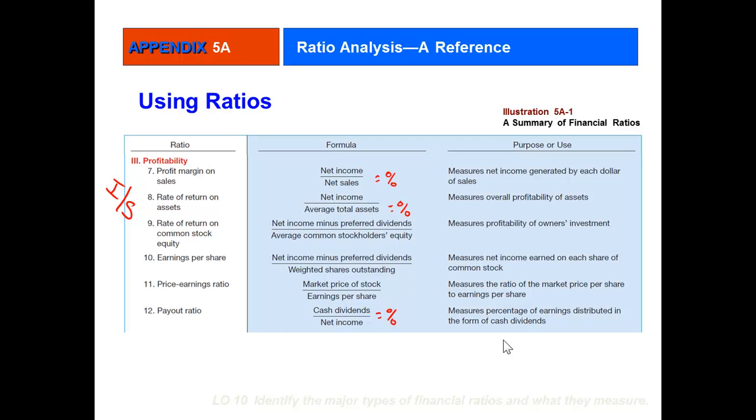You can also look at that from a shareholder's standpoint in ratio 9, rate of return on common stock equity, also known as return on shareholders equity, where you're looking at net income after paying dividends over average stockholder's equity—beginning of year plus end of year divided by 2. That ratio will always be higher than return on assets because the denominator is smaller. Earnings per share is net income minus preferred dividends over weighted shares of outstanding common stock. That tells a shareholder their share of profits if they own one share of stock.